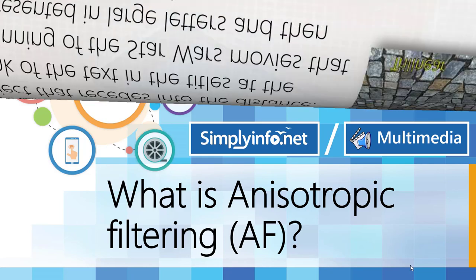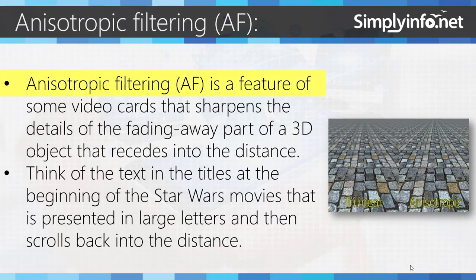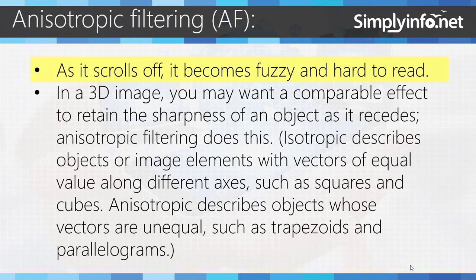Anisotropic Filtering is a feature of some video cards that sharpens the details of a fading away part of a 3D object that recedes into the distance. Think of the text in the titles at the beginning of a Star Wars movie, presented in large letters and then scrolling back into the distance. As it scrolls off, it becomes fuzzy and hard to read. In a 3D image, you may want a comparable effect to retain sharpness as an object recedes. Anisotropic Filtering does this.